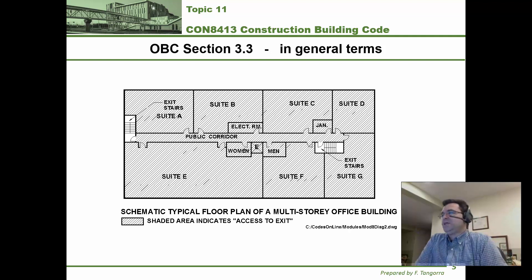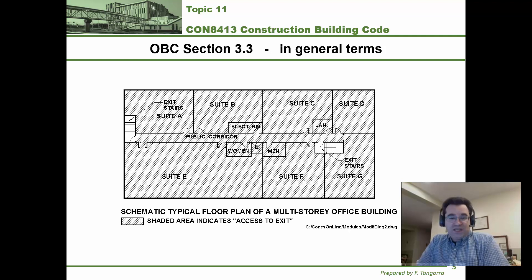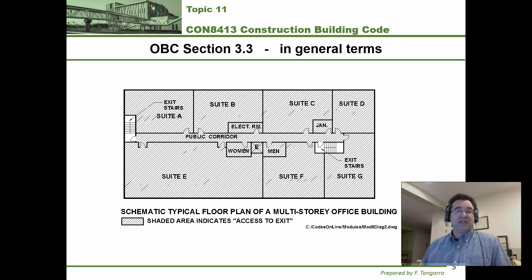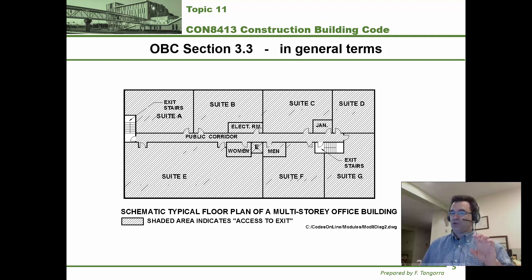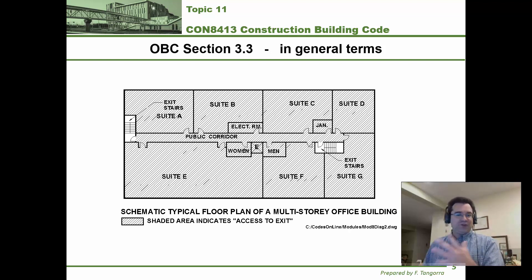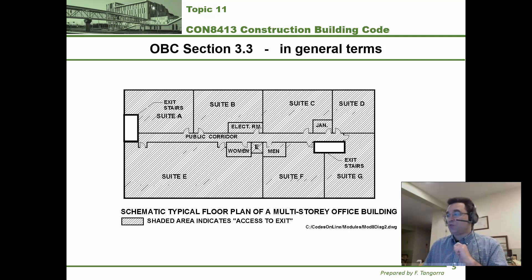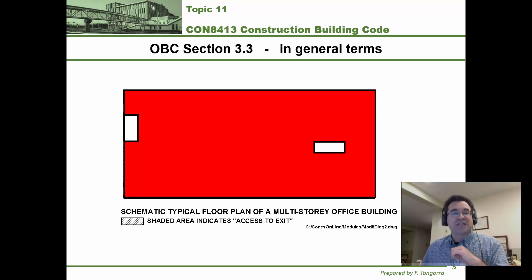This is an image from topic 10 — a floor area with a number of suites labeled A through G, so seven suites. What we're covering with section 3.3, access to exits, is what the building code requires in a floor area for everything up to but not including the exit itself. The exits in this drawing are highlighted in white — just the stairways. Everything else shown in red counts as access to exit, which is everywhere on the floor up to but not including the exit.